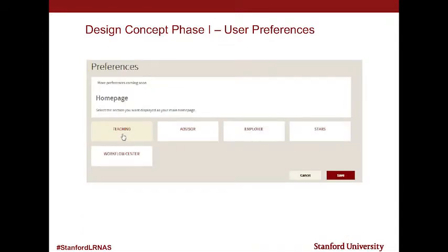We went really light with preferences in the first phase, and that was the result of some usability testing and surveying we did of our users. We were surprised to learn our users didn't want as many personalization features. Maybe when they're going out doing personal business — shopping, etc. — they're interested in personalization. With us, they were expecting us to put something meaningful in front of them as soon as they log in without them having to take extra steps. This is our one personalization — allowing people to set their homepage — because we do have a lot of people who are both a student and an employee, a faculty member and an employee, etc.